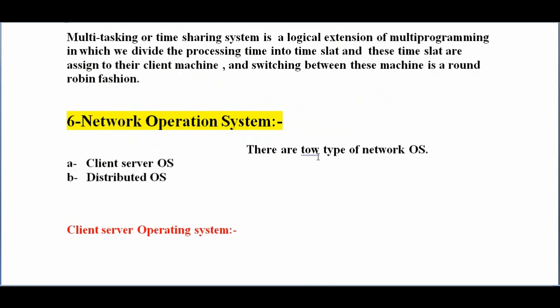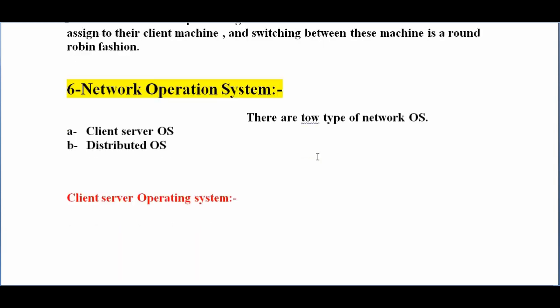The next is network operating system. There are two types of network operating system: number one, client-server operating system, and number two, distributed operating system.